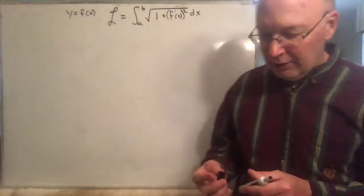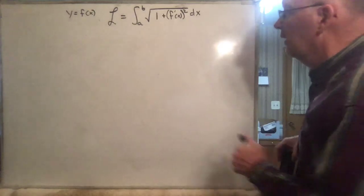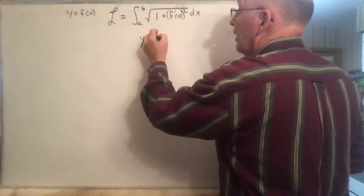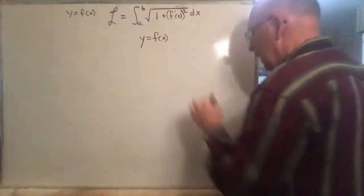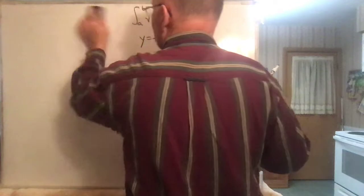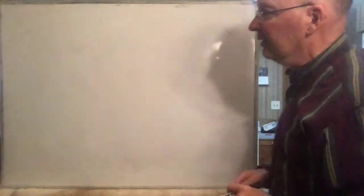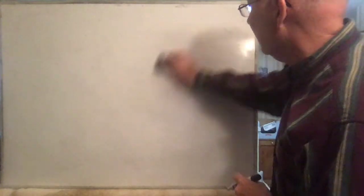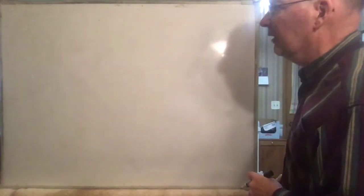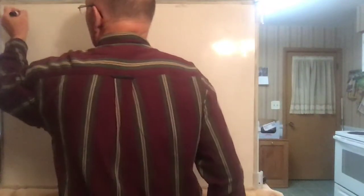This is a continuation of arc length. This is the formula we had for a function of the form y equals f of x. Now I'm going to do a little excursion into parametric equations. Depending on the textbook, some include this material in the section on arc length, and sometimes authors have it in their own section. So let me explain what a parametric equation is.